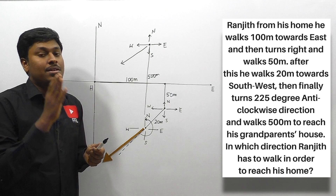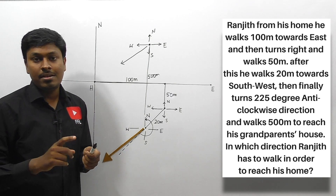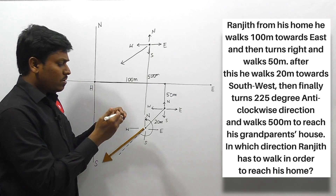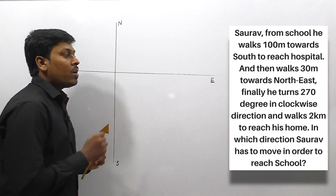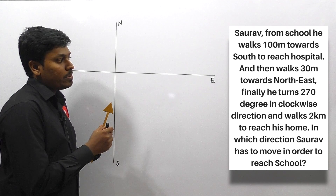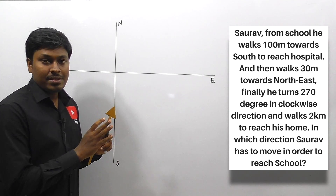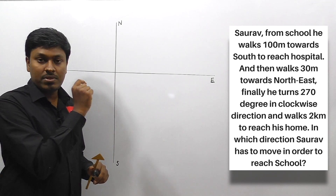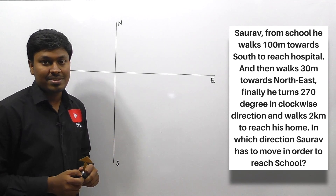If you are learning this concept newly, kindly take a note or download this video, because these are the most expected questions in IBPS PO. Download this video and before going for IBPS PO 2017, have a glance at it. Question number two: Sorrow from school walks 100 meters towards south to reach hospital, then walks 30 meters towards northeast, finally turns 270 degrees in clockwise direction and walks 2 kilometers to reach his home. In which direction does Sorrow have to move in order to reach school? This question is similar to the previous one — every student will solve the first three lines, but turning 270 degrees clockwise is where most students make a mistake.